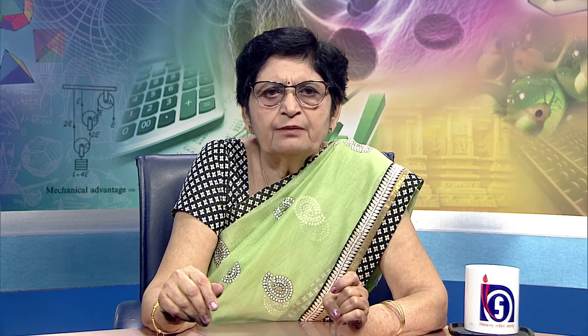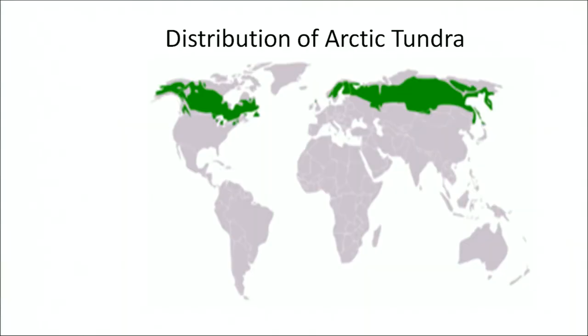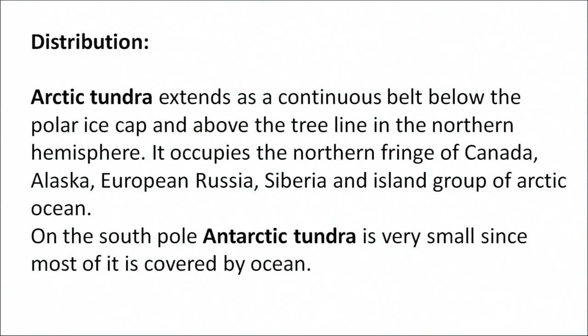Next we come to the most harsh condition biome, that is the tundra. The word tundra means 'barren land' since they are found in regions of the world where environmental conditions are very severe. There are two types of tundra: arctic and alpine. The arctic tundra is at latitudes below the poles and the alpine tundra is found at high altitudes on mountain peaks. These regions show the arctic tundra in the northern region just below the poles, extending as a continuous belt below the polar ice cap above the tree line in the northern hemisphere. It occupies the northern fringe of Canada, Alaska, European Russia, Siberia and the island groups of the Arctic Ocean. On the south pole, the Antarctic tundra is very small since most of the south pole is covered with ocean.